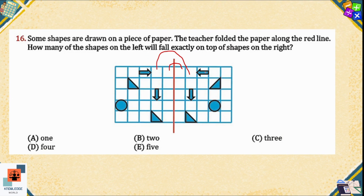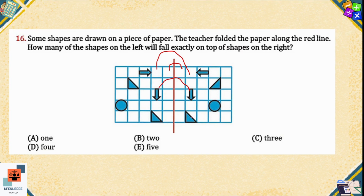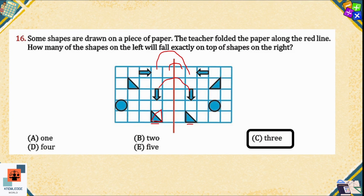This arrow will fall exactly on the opposite arrow because the shapes are mirror images of each other, and they are in the same column when folded. Similarly, this triangle will fall on that triangle, and the third arrow will fall exactly on its corresponding arrow. However, this circle is in the first column and the second circle is in the second-to-last column, so they will not fall exactly on each other. This triangle is also not an exact mirror image of the second triangle, so they cannot exactly overlap either. There are exactly three shapes that will fall on top of each other — option C is the correct answer.